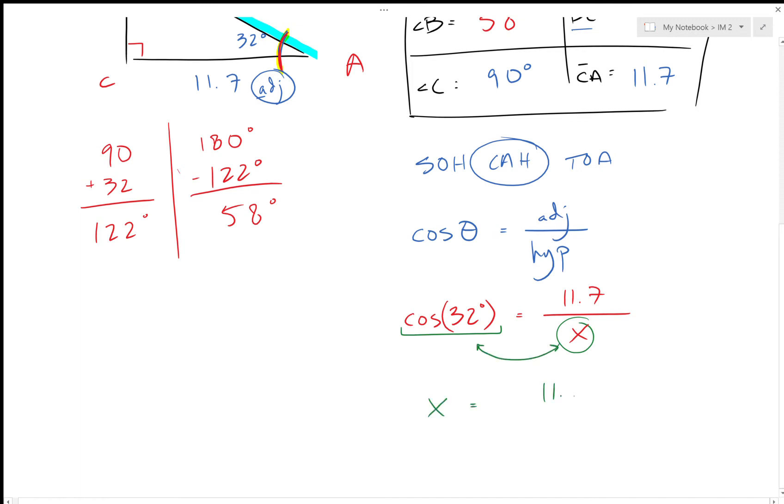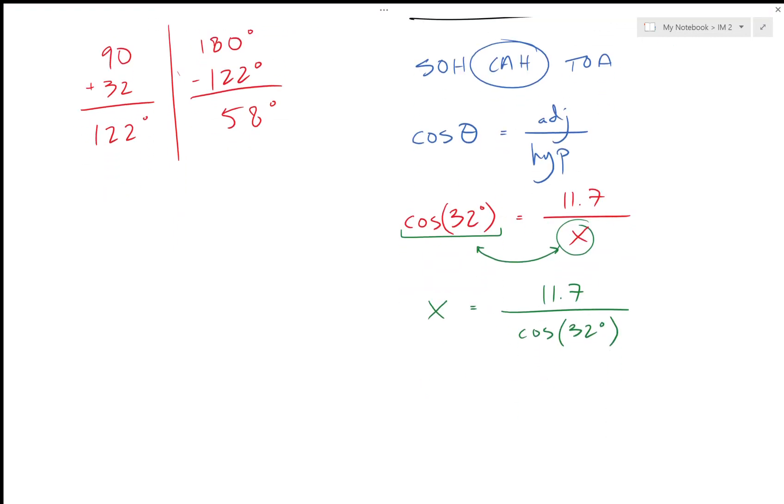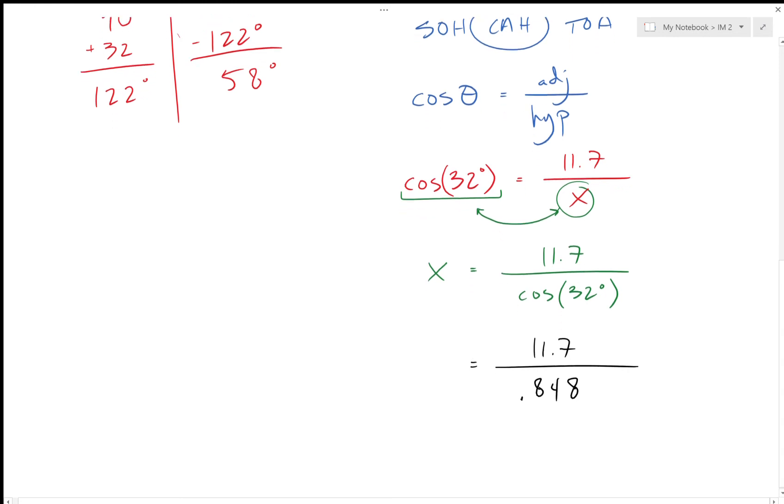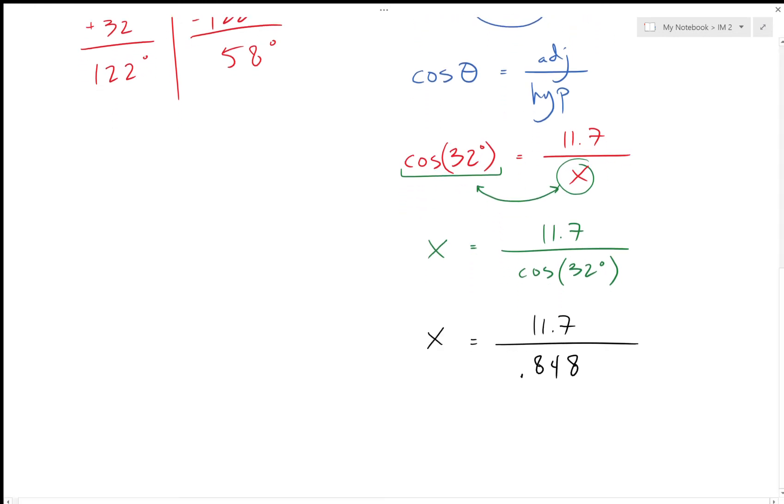So X equals 11.7 over cosine of 32 degrees. And now this is all just calculator work: 11.7 still on the top, the cosine of 32—so cosine 32 degrees, 0.848. I usually go with three numbers here just to leave a little bit of room, and then later on you can reduce it down to however many that they're asking for.